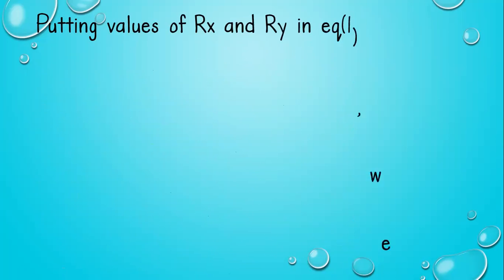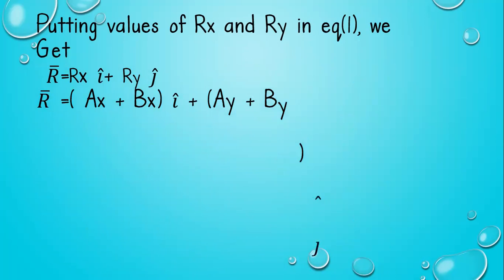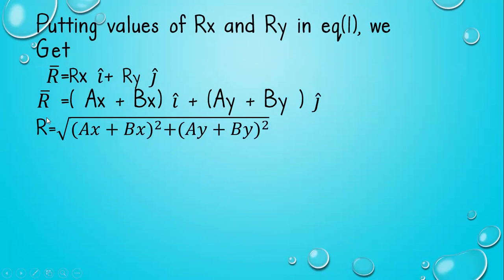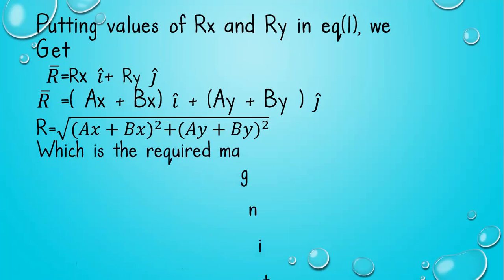Putting the values of Rx and Ry into equation 1: R = (Ax + Bx) î + (Ay + By) ĵ. Taking the magnitude using the Pythagorean theorem: |R| = √((Ax + Bx)² + (Ay + By)²). This is the required magnitude of the resultant vector.